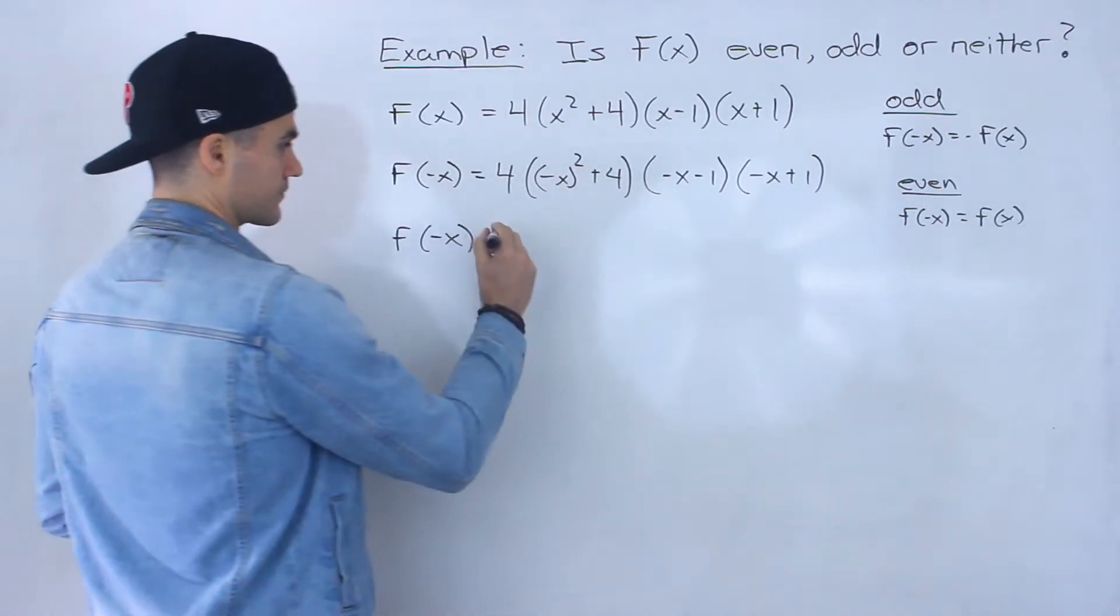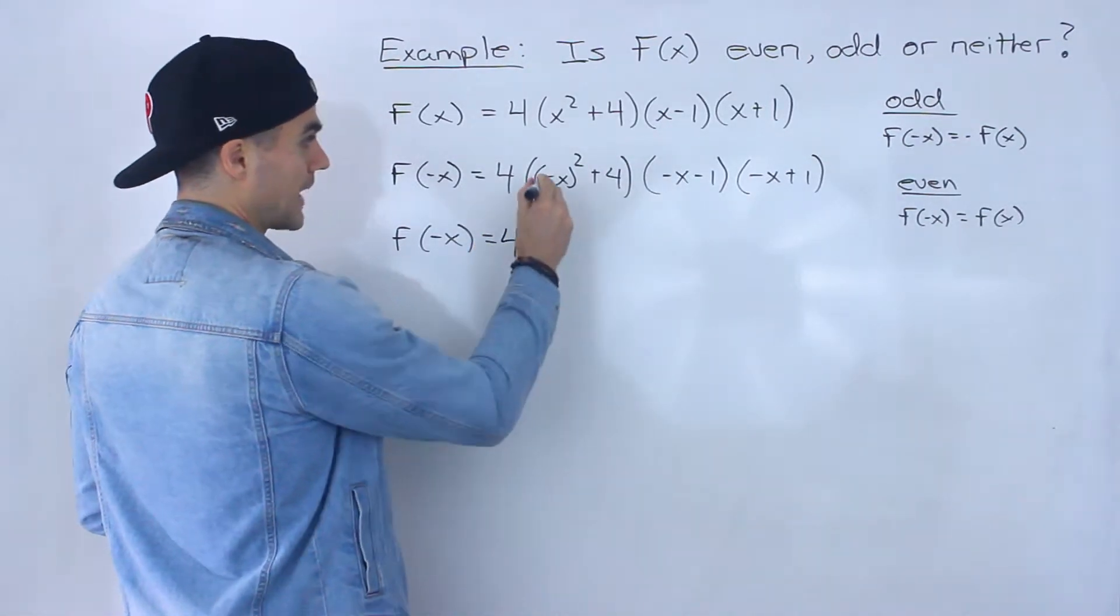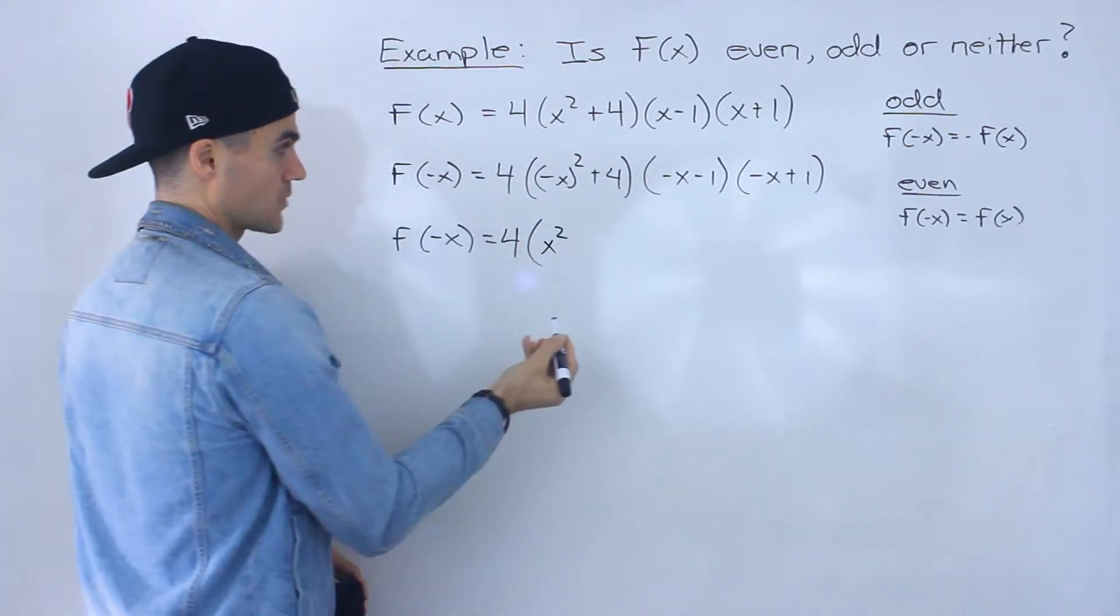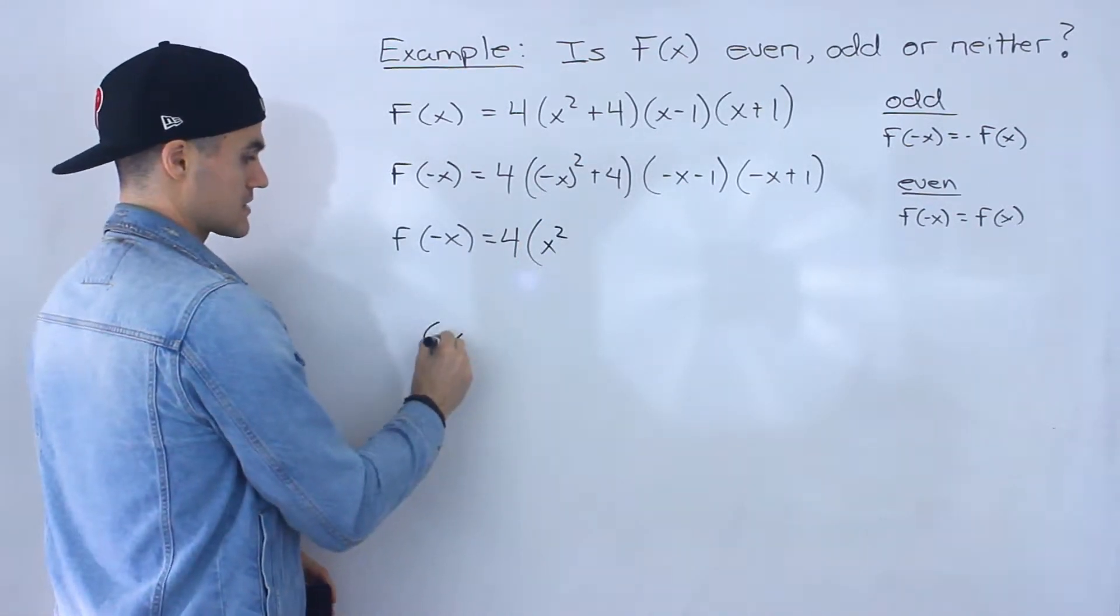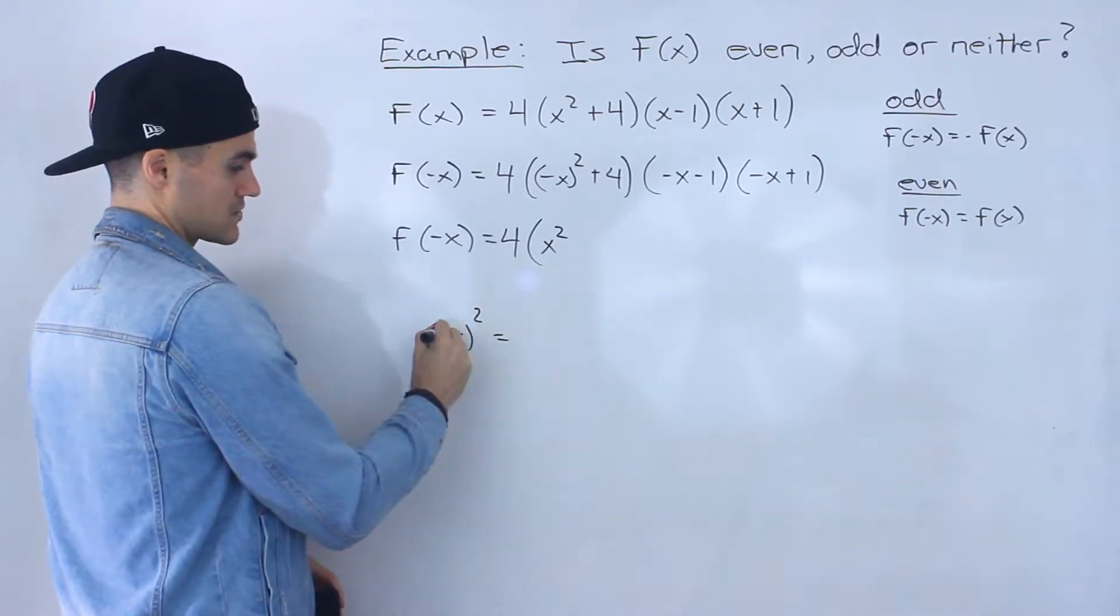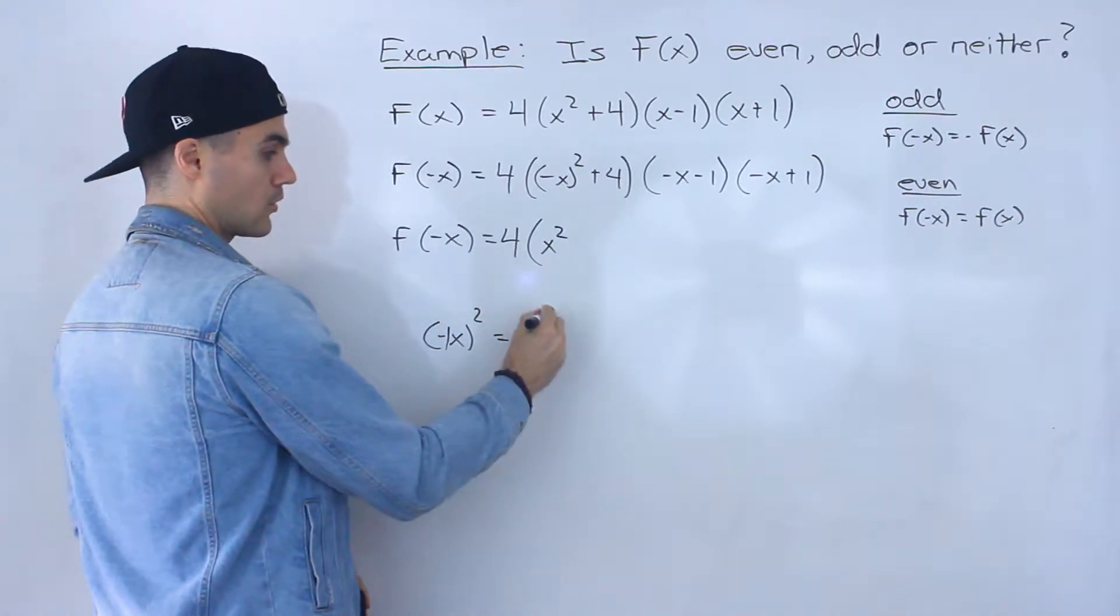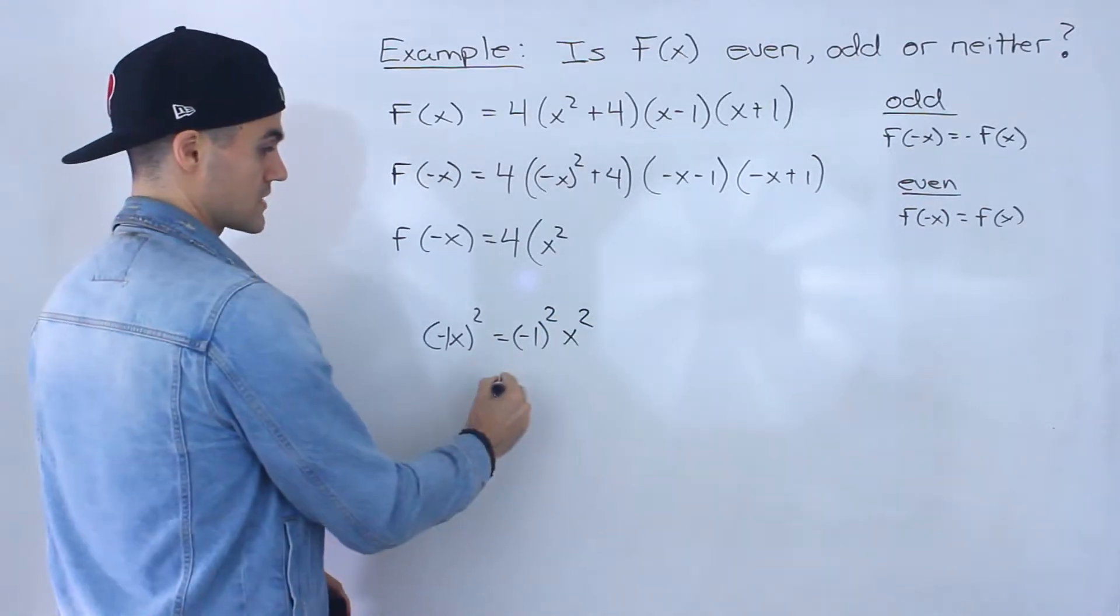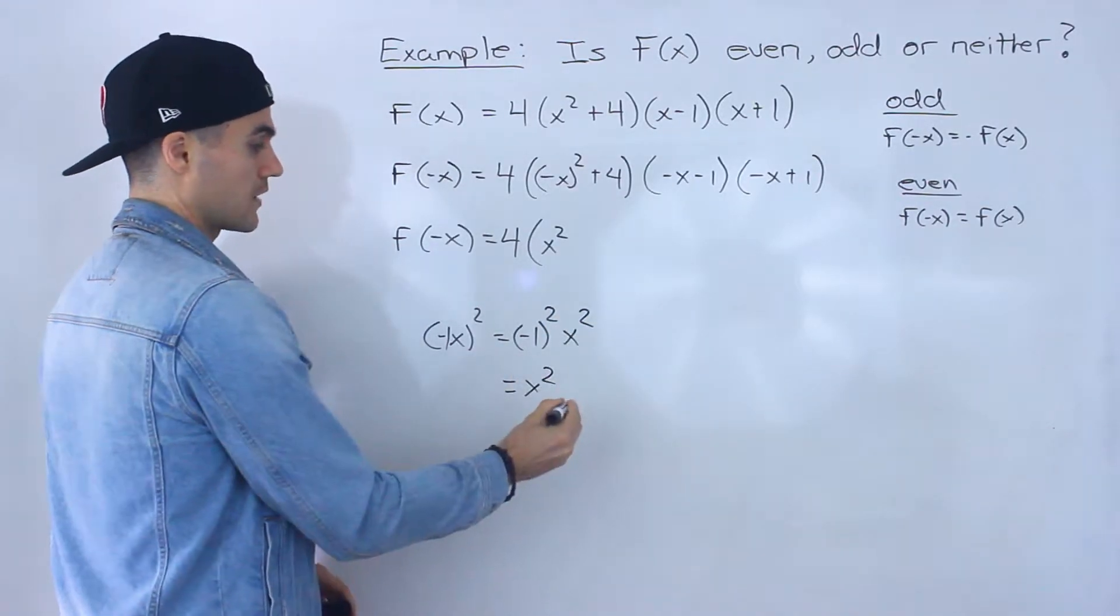So let's try to simplify this a little bit. Now negative x squared, we know that that's just going to be x squared, right? Because as a review, negative x squared, there's like a negative 1 here. The negative 1 would go to the power 2 and then x would go to the power 2 as well. So we would end up with x squared here.